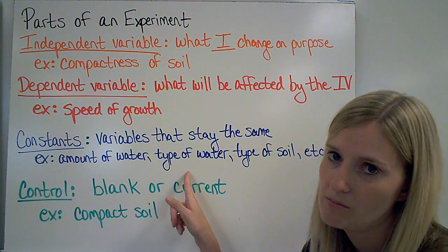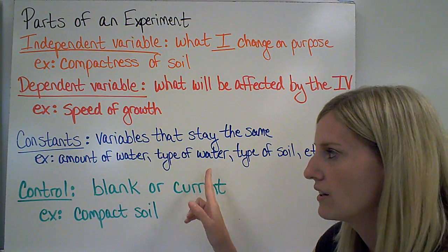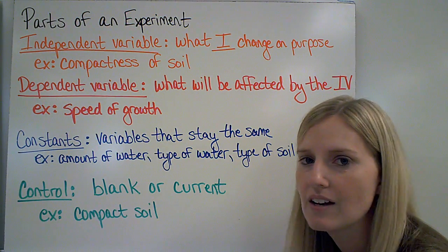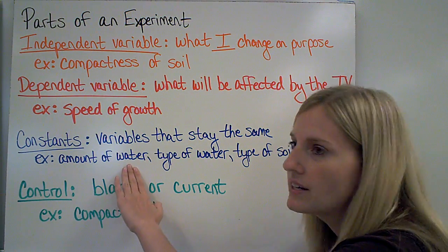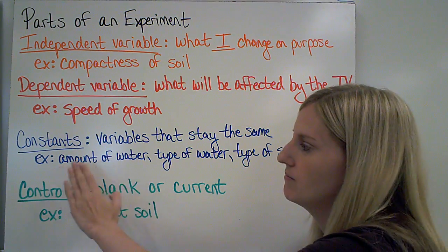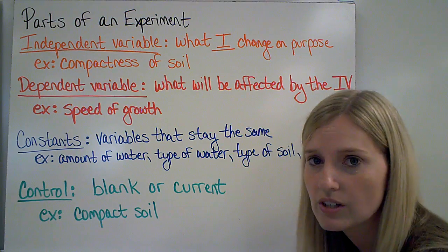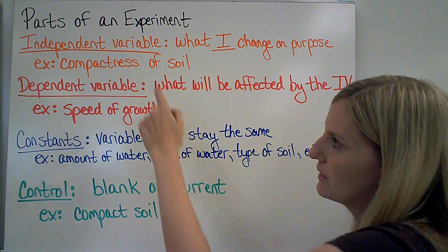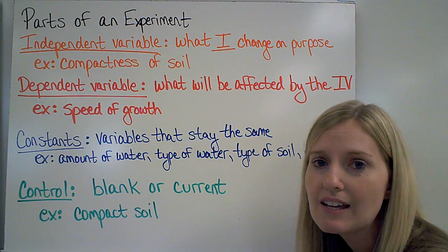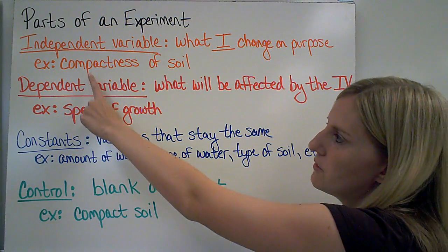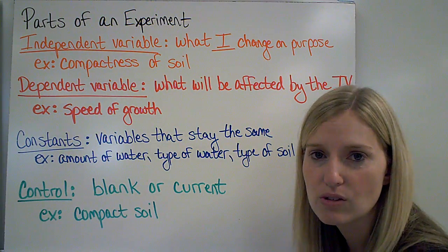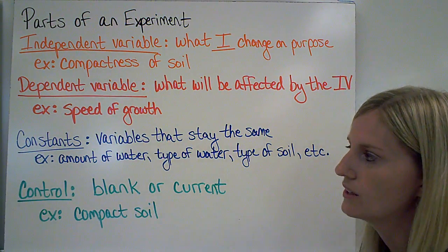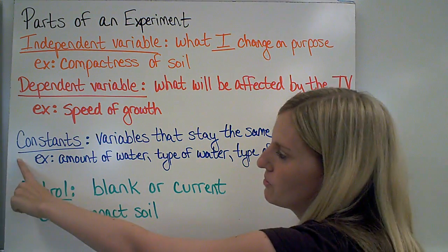My constants are all of the things I need to keep the same — how much water each of my plants gets, the type of water, and so on. Notice that both of those deal with water, so just writing 'water' is not enough information. You need to tell me what it is about the water that's going to stay the same: the amount, the type, the temperature, etc. Also notice that 'soil' alone would not work as the independent variable, because I'm still using the same type of soil — all I'm changing is how compact it is. Anything I keep the same, those are my constants.